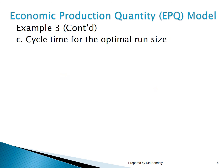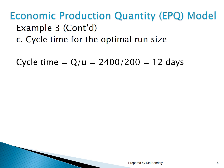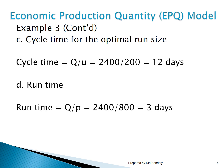For part 3, we find the cycle time using T equals Q over U, which equals 2,400 divided by 200, giving 12 days. For part 4, the run time is Q over P, which equals 2,400 divided by 800, giving 3 days. Recall that the cycle splits into two phases: the production phase (runtime) and the consumption-only phase.